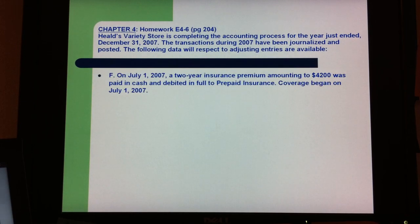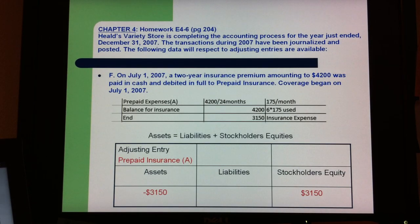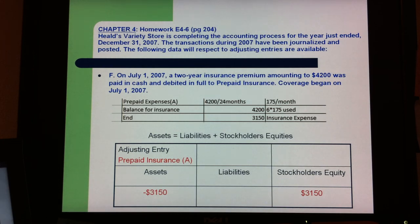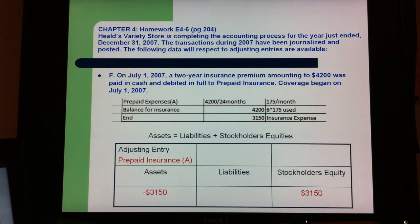Part F is about prepaid insurance. A two-year insurance premium of $4,200 was paid in cash and debited to prepaid insurance. Coverage began on July 1st, 2007. In this case, the asset is $3,150 and stockholders' equity is also $3,150.